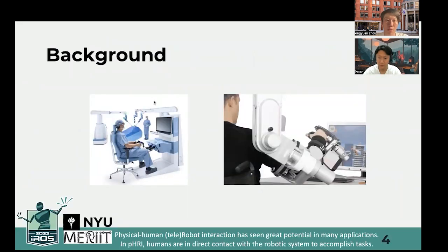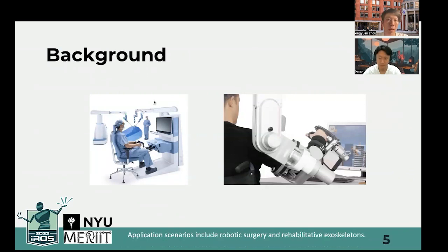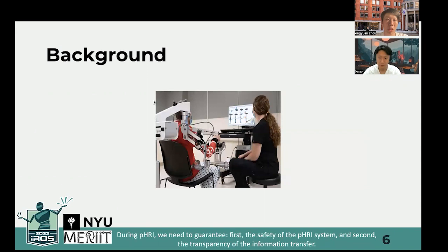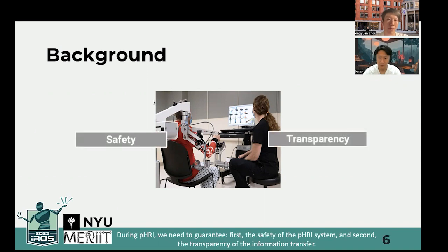Physical human-telerobot interaction has seen great potential in many applications. In physical human-robot interactions, humans are in direct contact with the robotic system to accomplish tasks. Application scenarios include robotic surgery and rehabilitative exoskeletons. During pHRI, we need to guarantee, first, the safety of the pHRI system, and second, the transparency of the information transfer.